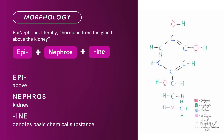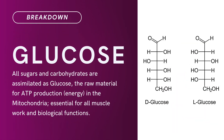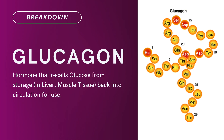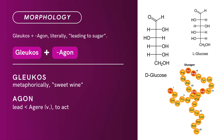Compound Term: Glucose. Brief definition — all sugars and carbohydrates are assimilated as glucose, the raw material for ATP production, meaning energy, in the mitochondria. Essential for all muscle work and biological function. A related term: Glucagon. Brief definition — a hormone that recalls glucose from storage in liver and muscle tissue back into circulation for use. Term Morphology: